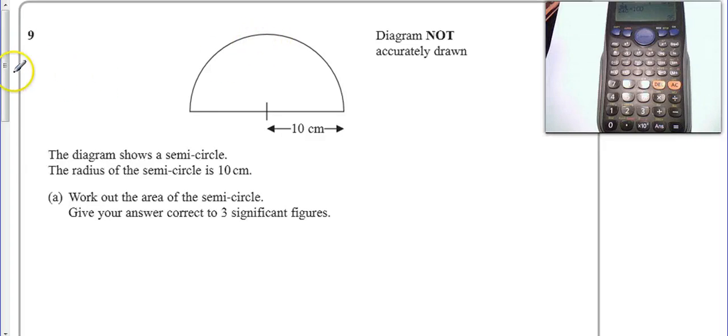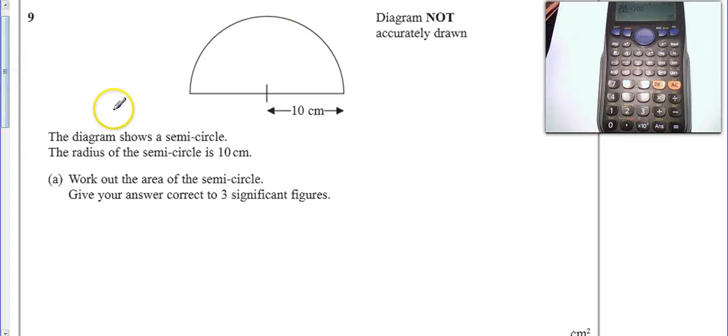Okay, question number nine. So the first part tells us that we've got a semicircle and the radius of the semicircle is 10. Work out the area of the semicircle. Give your answer to three significant figures.